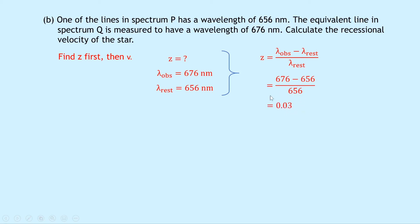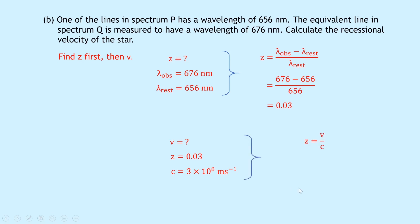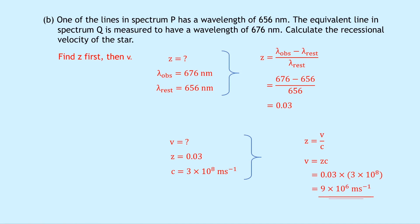We now use z equals 0.03 in the velocity equation. Using z equals v over c and rearranging to v equals z times c: substituting in 0.03 times 3×10⁸ gives a recessional velocity of 9×10⁶ meters per second.